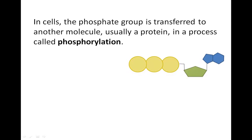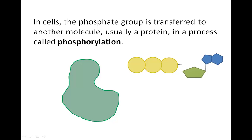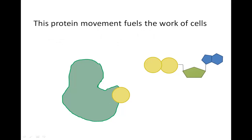In cells, the third phosphate group is transferred to another molecule. When the other molecule is a protein, adding a negatively charged phosphate group to it causes it to change its shape. This movement can do work in the cell.